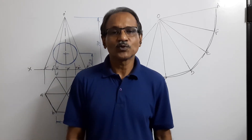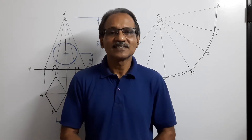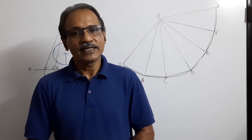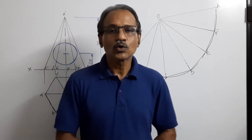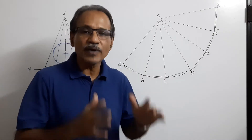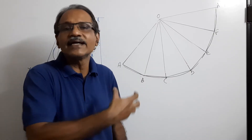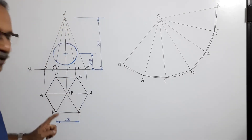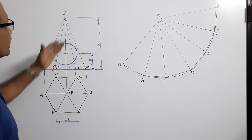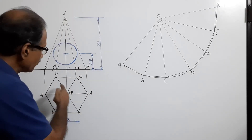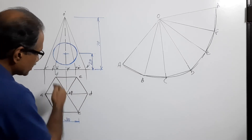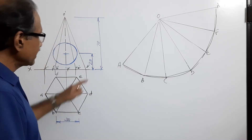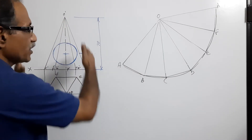Hi students, welcome to Engineering Graphics class. I am Dr. Vinod Kumar. In this video about development of surfaces, we are going to draw a hexagonal pyramid standing on its base having a circular hole drilled through it. The hexagonal pyramid has a 30 mm side of base and 70 mm axis, standing on its base with two base sides parallel to VP.